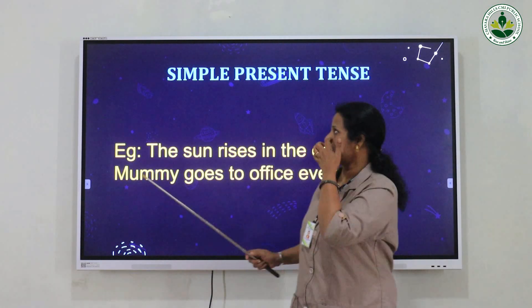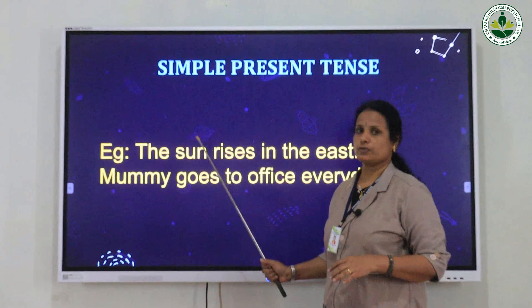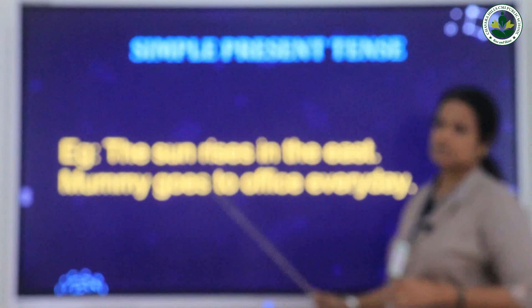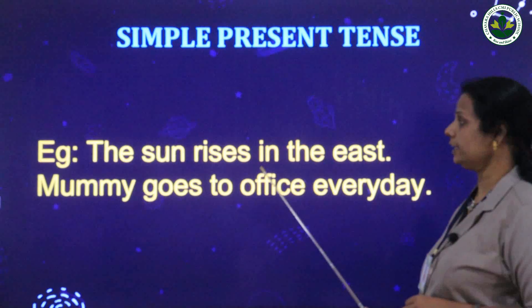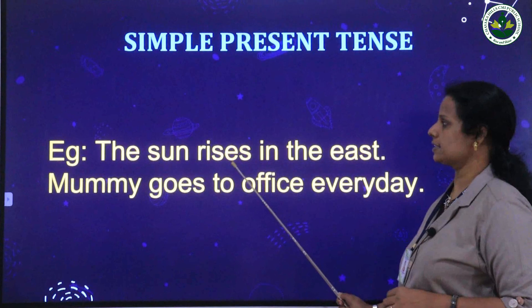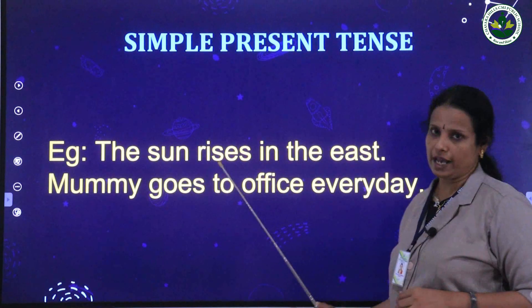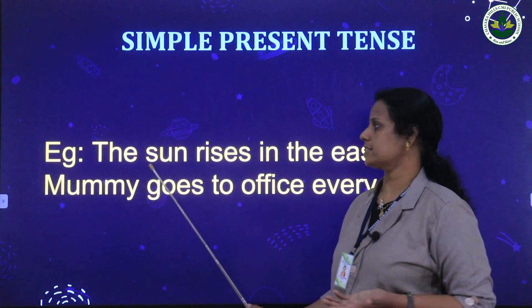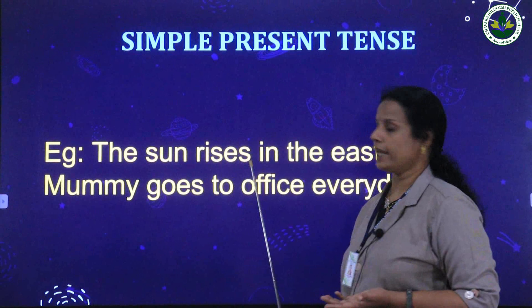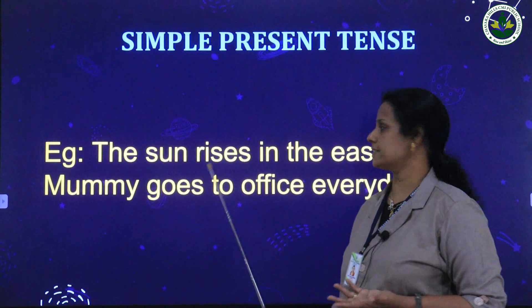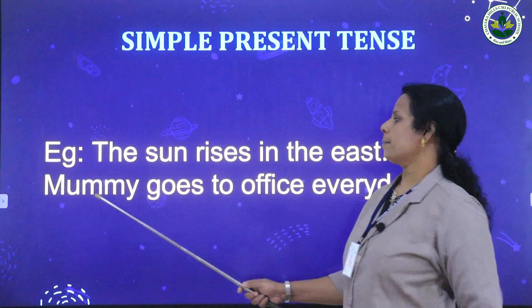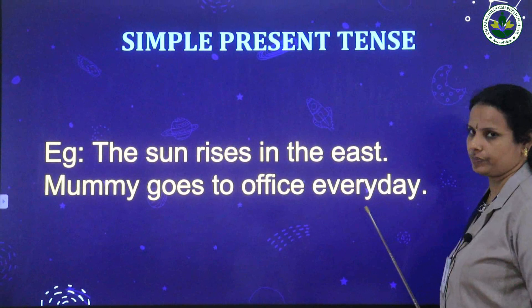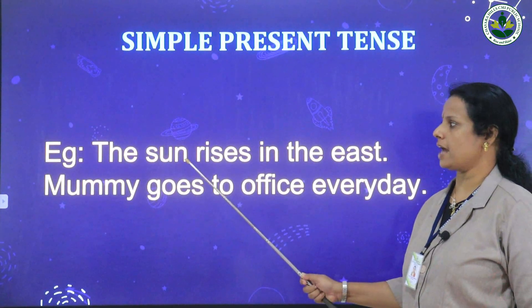We use present tense to speak about things that happen regularly or every day. For example: 'The sun rises in the east.' Here the verb is 'rise,' and since the noun is singular, we use 'rises.' Another example: 'Mummy goes to office every day.'